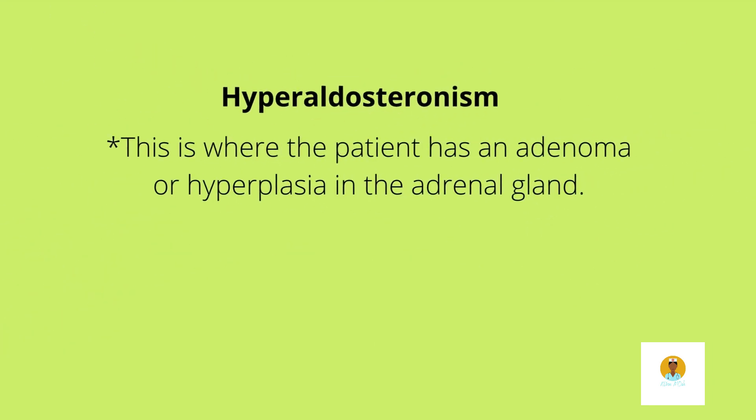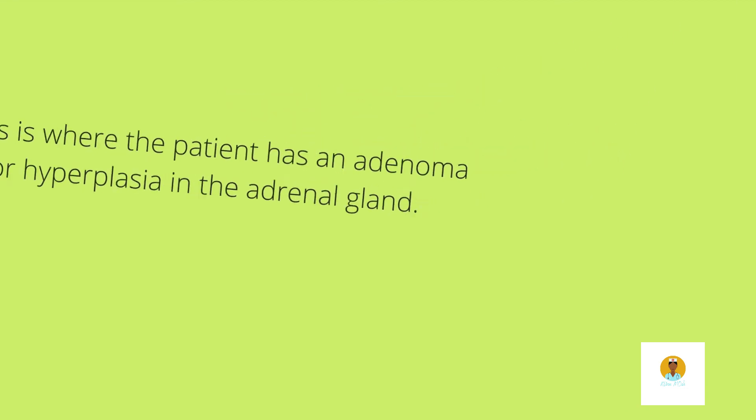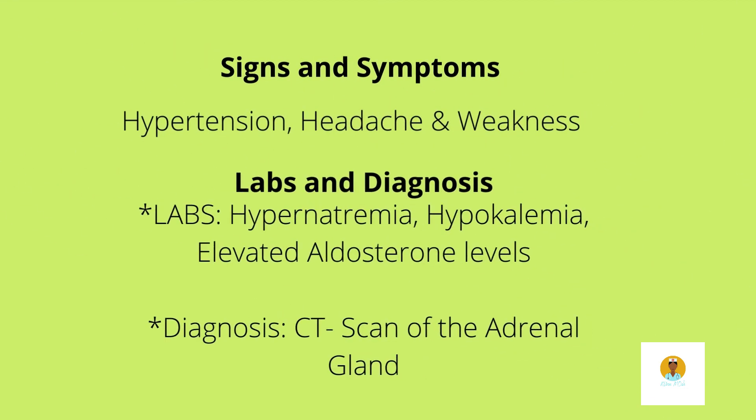Hyperaldosterone is where we have an adenoma or hyperplasia in the adrenal gland such that excess amounts of aldosterone are being secreted. Aldosterone causes the reabsorption of water and sodium and the excretion of potassium. With too much aldosterone, we have over-reabsorption of water and sodium and over-excretion of potassium, leading to hypertension due to increased blood volume.